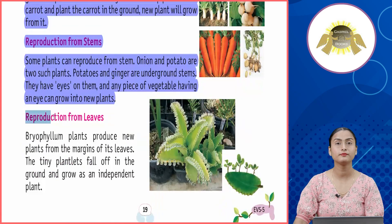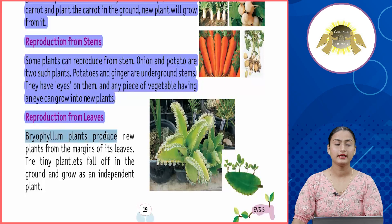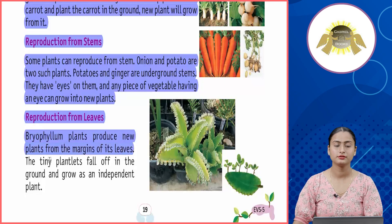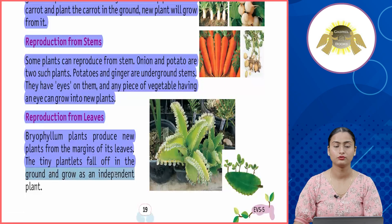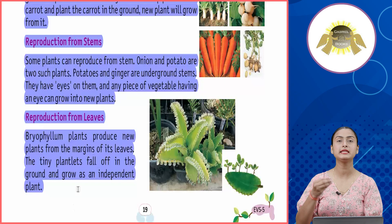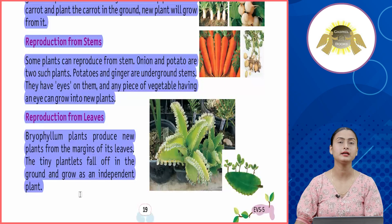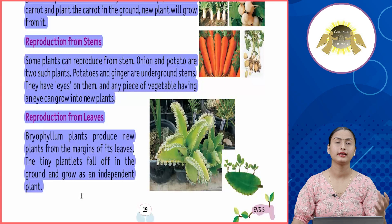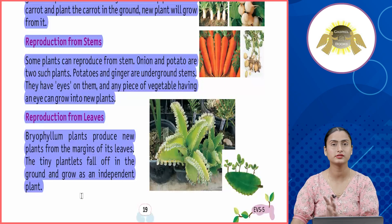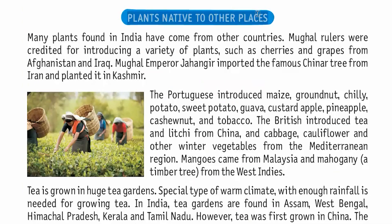Reproduction from leaves: Bryophyllum plants produce new plants from the margins of their leaves. The tiny plantlets fall off onto the ground and grow as independent plants. This is another form of vegetative reproduction.